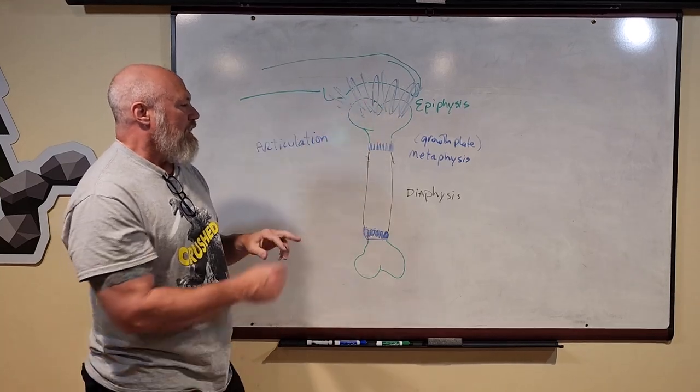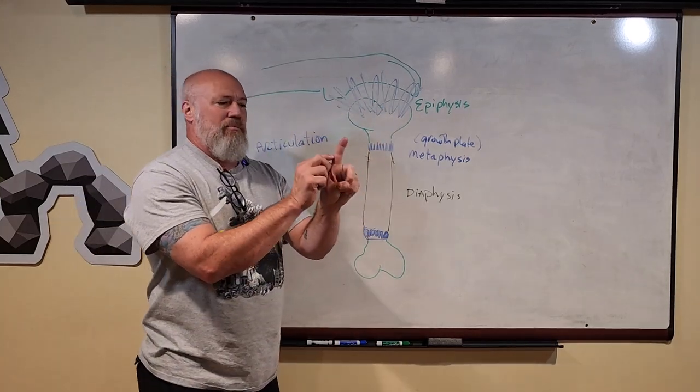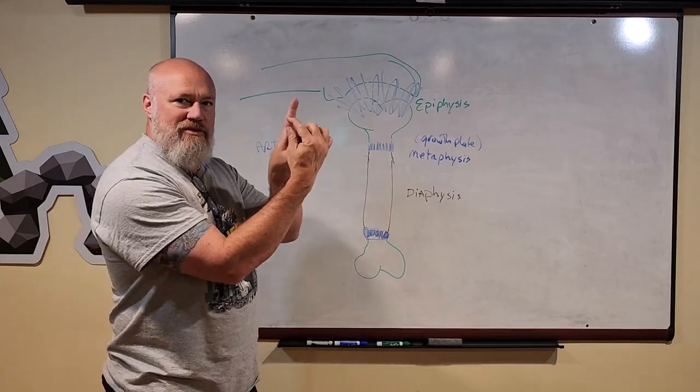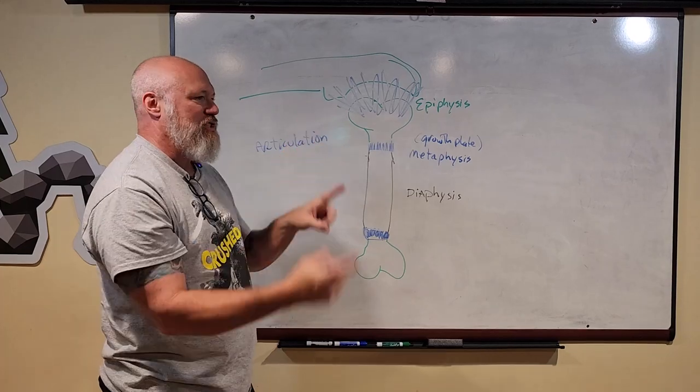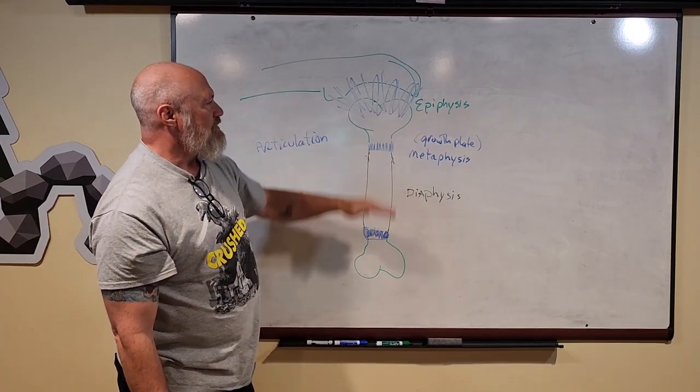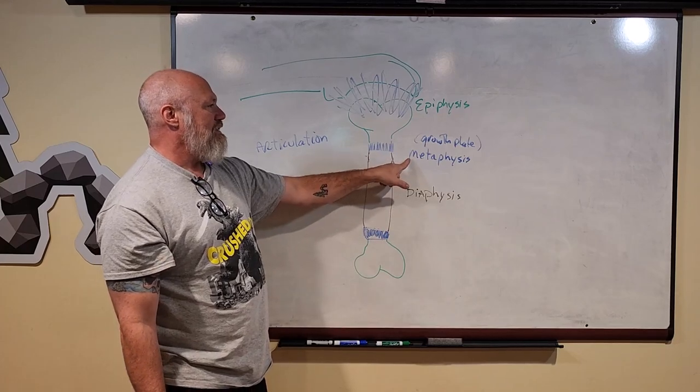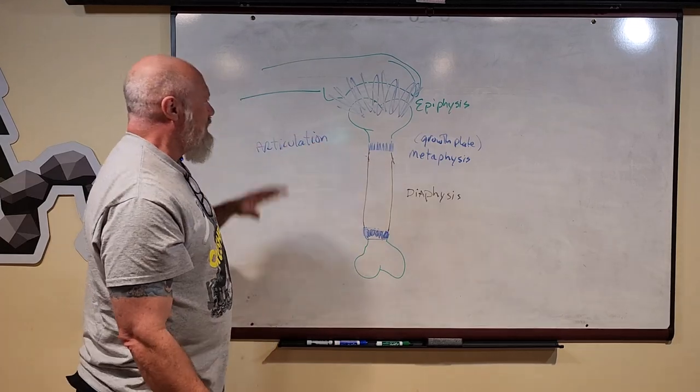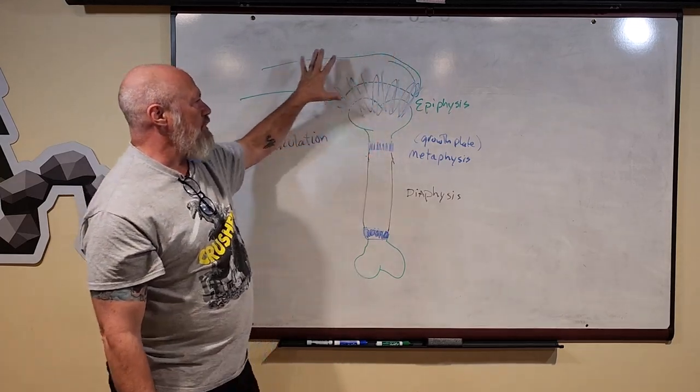Now believe it or not, those little bones in your finger, those are long bones—even though they're very, very short in measurement, their shape is long bone. Long bones have a diaphysis, two epiphyses or epiphyseal endings, and then the metaphysis where the growth plate is. So that's how bones grow, and we'll talk about articulations in a little bit more detail in a bit.